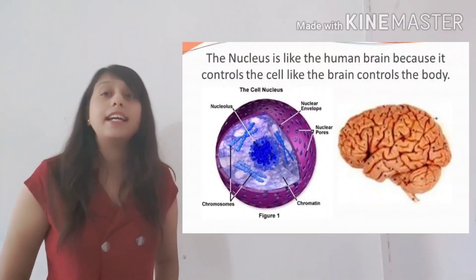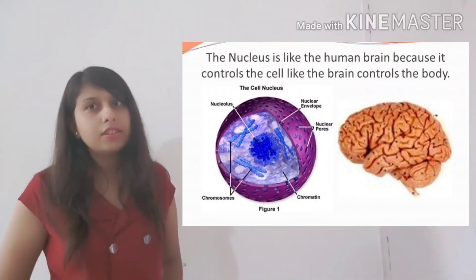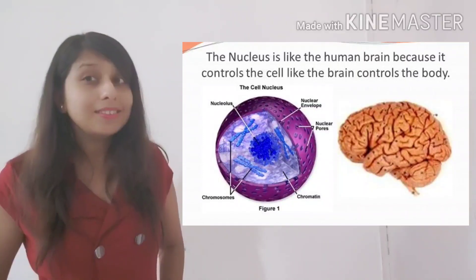Now next is the nucleus. Nucleus is a large spherical organelle which is present inside the cell. In animal cell, it is present in the central position whereas in a plant cell, it is present in the periphery. So now what about nucleus? Nucleus controls all the activities inside the cell. It can also be known as the control center of the cell or the brain of the cell.